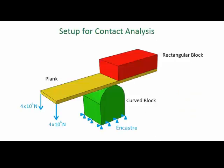We will now demonstrate the general contact method by modifying the example from the contact pairs tutorial. To refresh our memory, we have three parts: a curved block, a rectangular block, and a plank. The curved block is fixed on the bottom, and the plank is fixed at one end making it a cantilever.